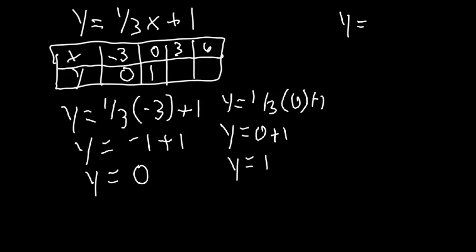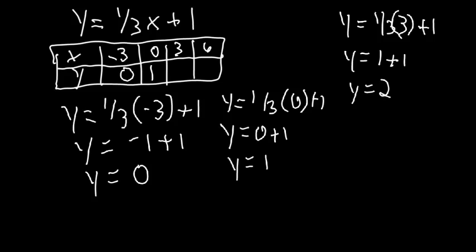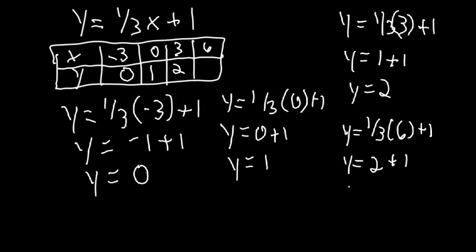Next, y equals one-third of 3 plus 1. One-third of 3 is 1, plus 1, so y equals 2. Then y equals one-third of 6 plus 1. One-third of 6 is 2, plus 1, so y equals 3. Now I have a completed function table.